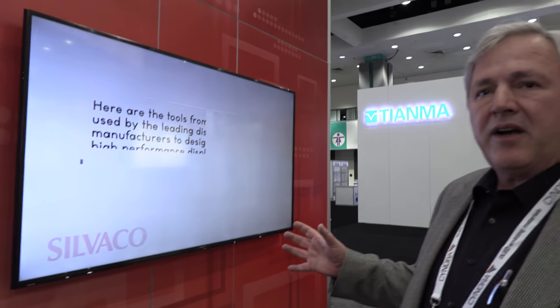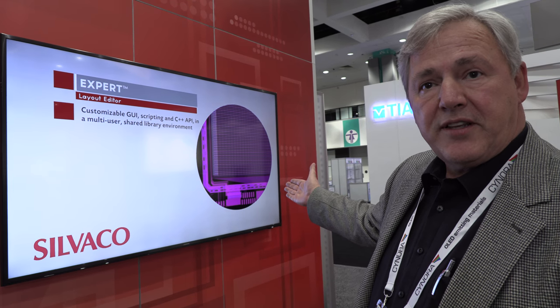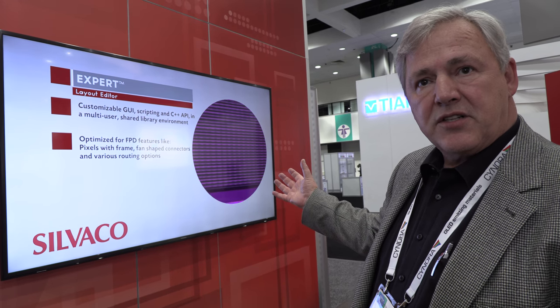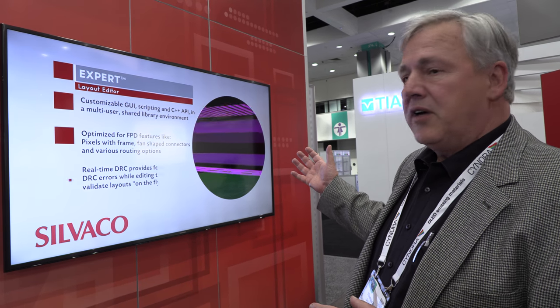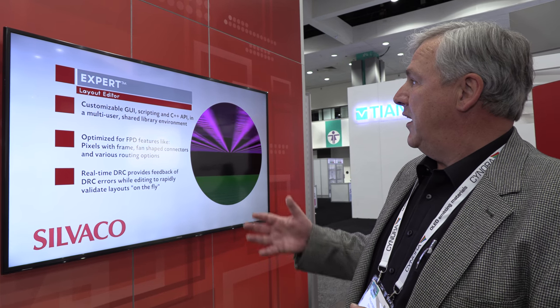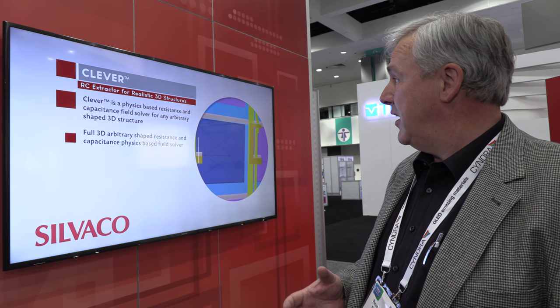Our software is used by many of the leading display manufacturers in the world. We drill a hole in the display and it starts with the layout, where you lay out your pixels. You do an electrical analysis of your layout. The tool is called Expert — it's our layout editor. We have specific features built into our layout editor for display because we've worked with display companies for a very long time. Clever is an RC extractor, so you can extract the parasitics — any arbitrary shape where you can extract R and Cs for electrical verification.